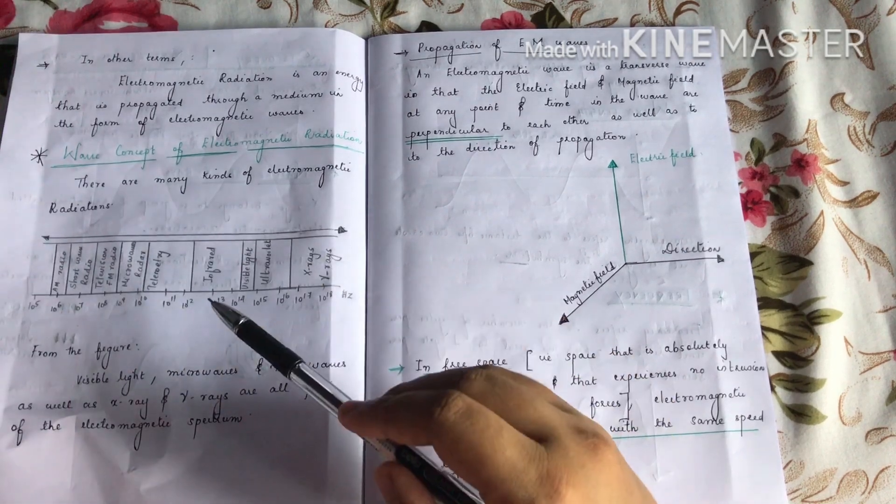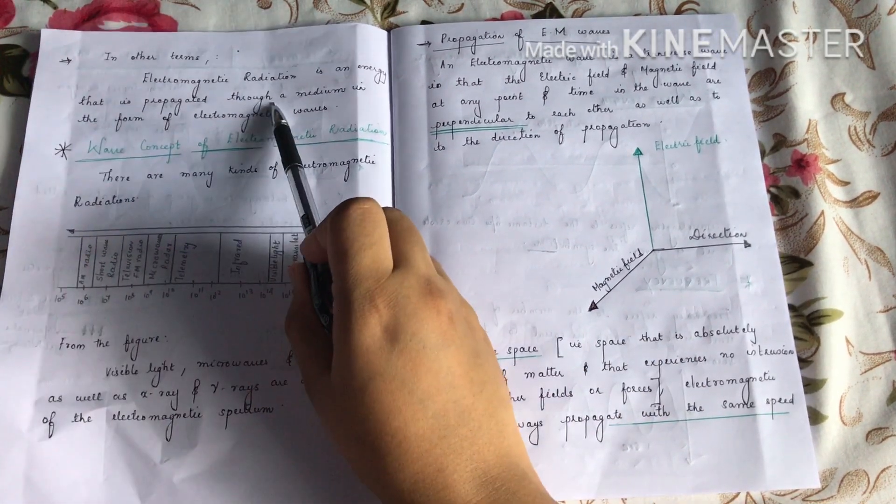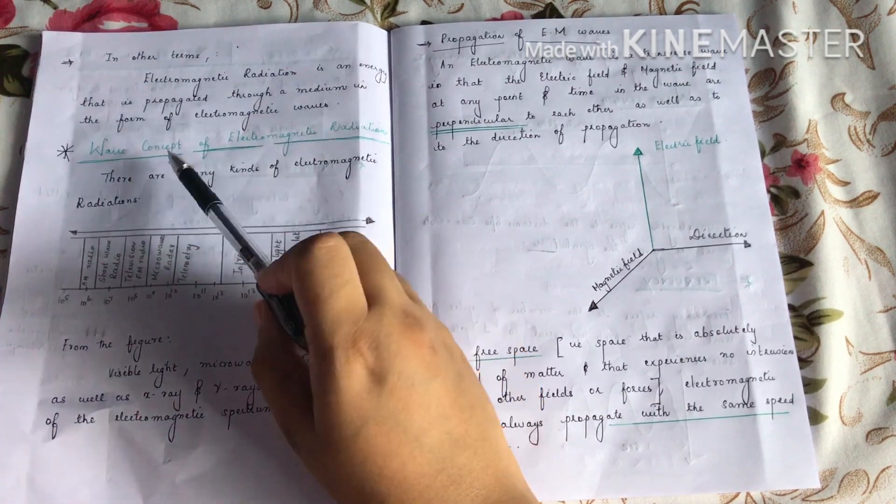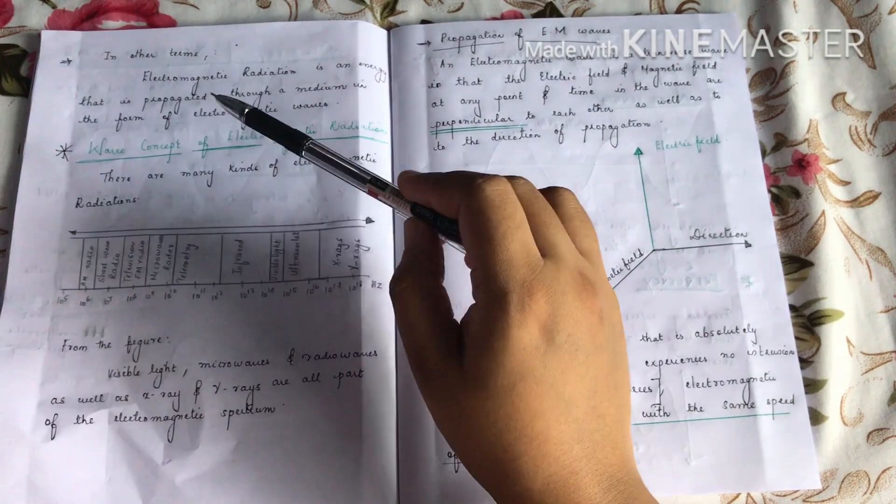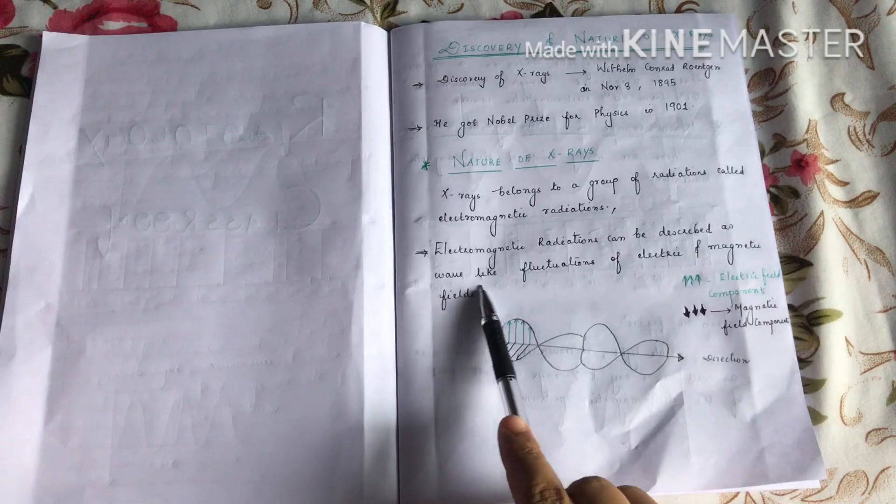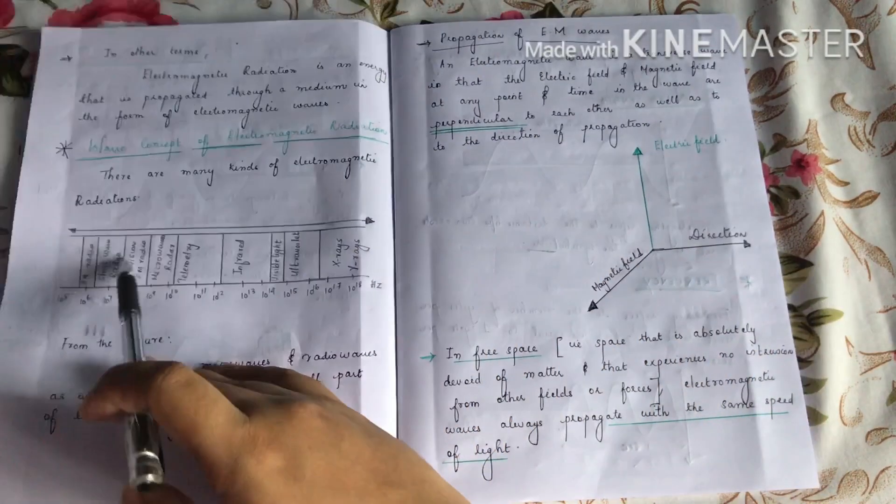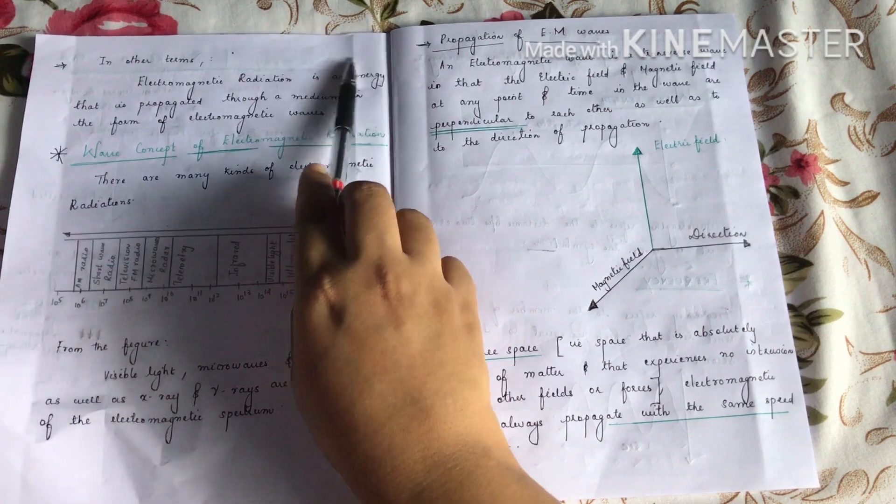In other terms, electromagnetic radiation is energy that is propagated through a medium in the form of electromagnetic rays. From the first description, it is like a wave. From the second description, it is like energy, meaning it is a particle.